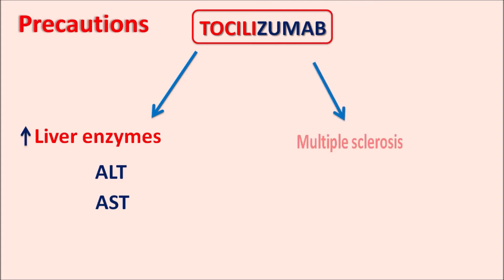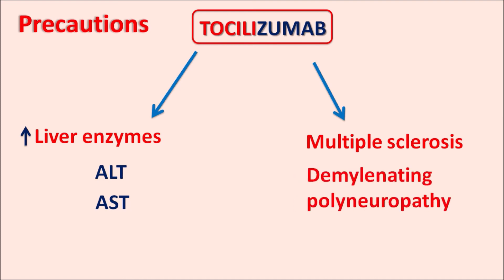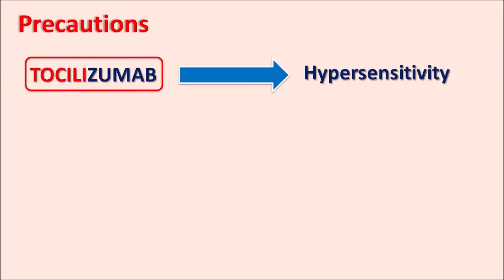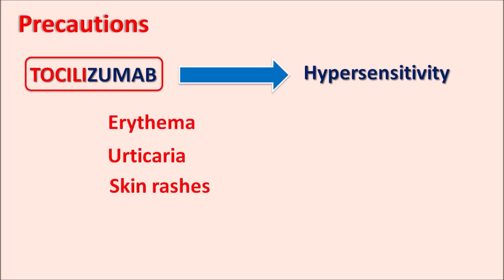This drug may increase the risk of multiple sclerosis as well as demyelinating disorders such as demyelinating polyneuropathy. Another important precaution is hypersensitivity. This drug can produce hypersensitive reactions, particularly at the site of infusion, including erythema, urticaria, skin rashes, and even severe anaphylaxis.